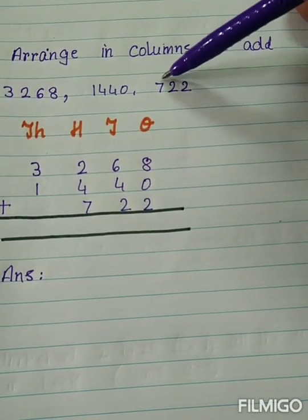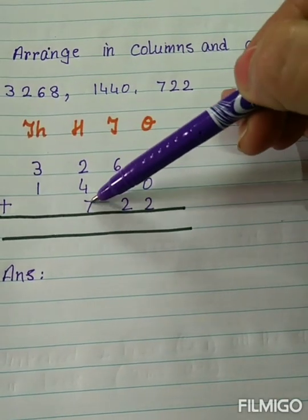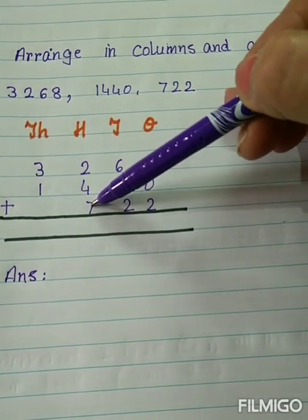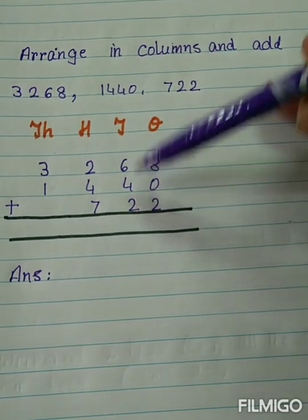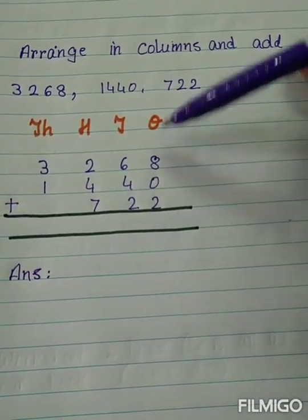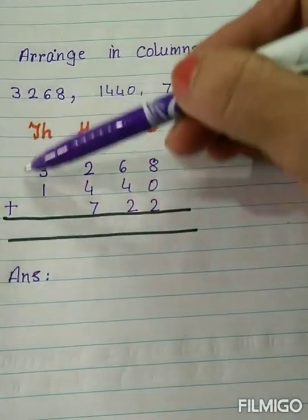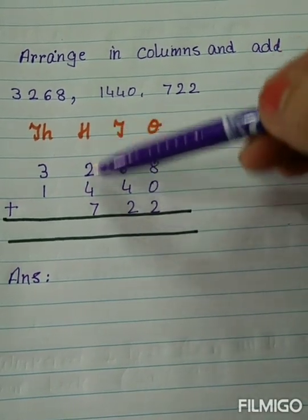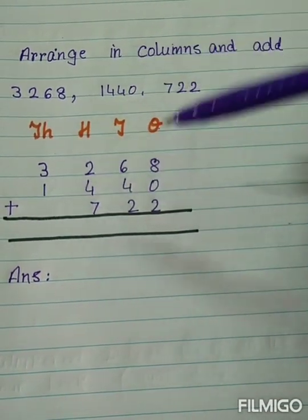722 means that we have to write it from the hundreds place. 700, 2 tens, and 2 ones. Now we have to add all these numbers. Let's start.